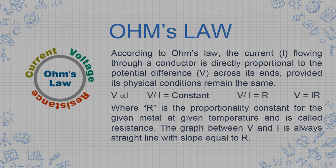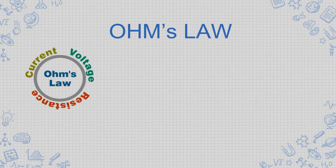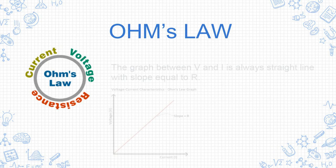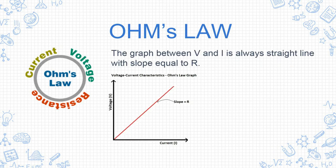Where R is the proportionality constant for the given metal at a given temperature, and it is called resistance. The graph between V and I is always a straight line. Ohm discovered this by finding values of V and I with the help of a circuit diagram. The graph between V and I is always a straight line with slope equal to R.